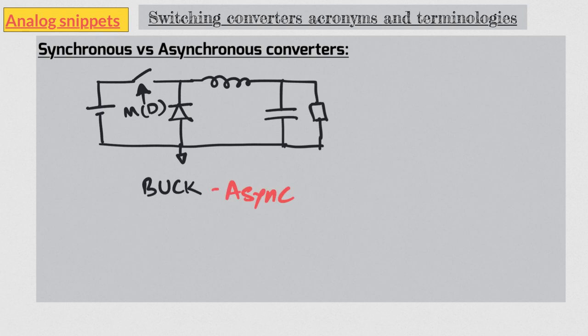This is asynchronous because we don't need to synchronize the turning off of this switch and turning on of this diode. The diode turns on and off pretty much on its own, and this asynchronous behavior is obviously advantageous because it simplifies the design. But most modern integrated converters are not designed that way. The reason is that this diode has a large drop across it, and this large drop reduces the converter efficiency.